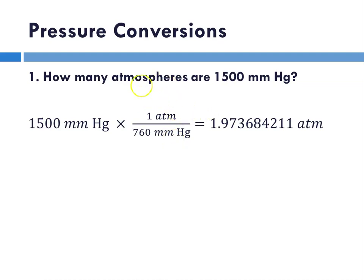When we do a conversion factor, you always want to put the unit you want in the numerator and the unit that you're given or getting rid of in the denominator. That way your units cancel. So here, millimeters of mercury cancels out, and we would be left with atm's as our unit.